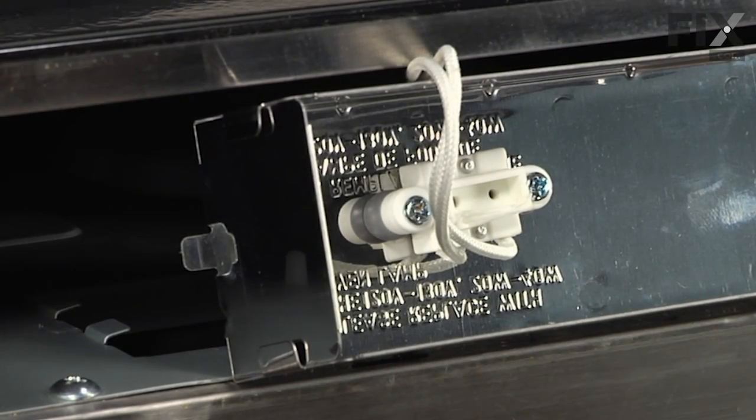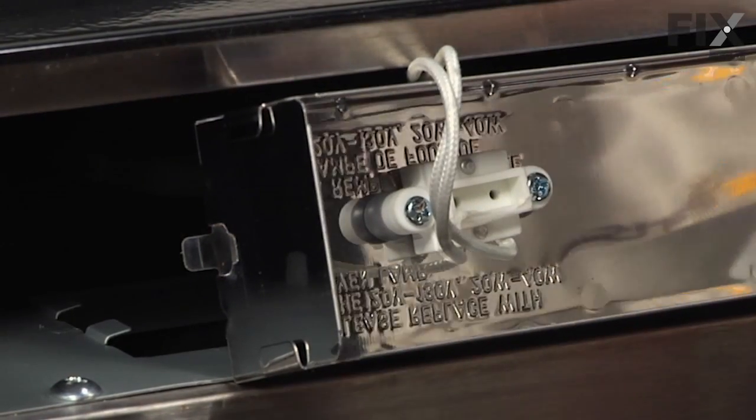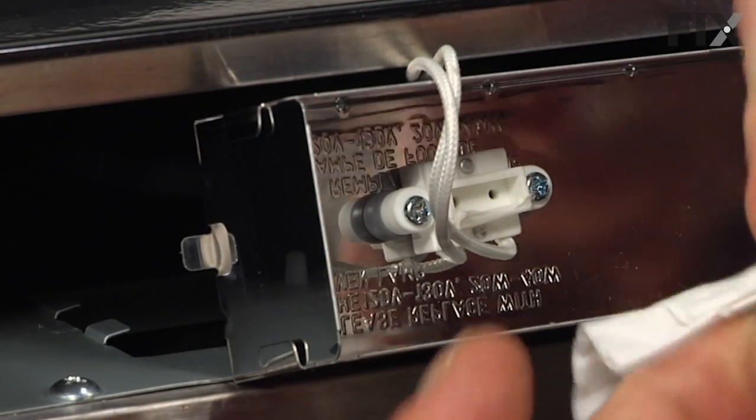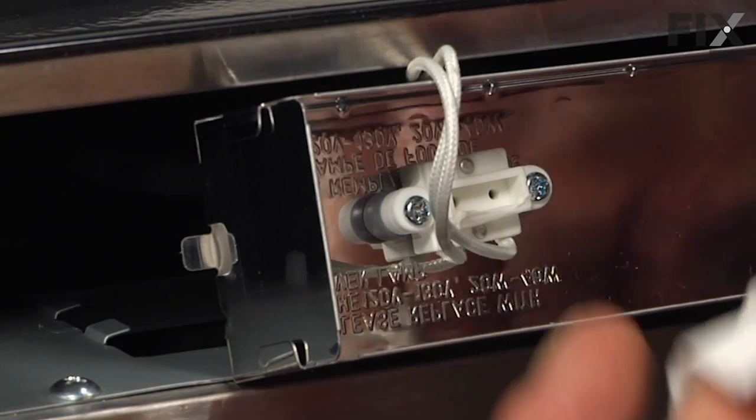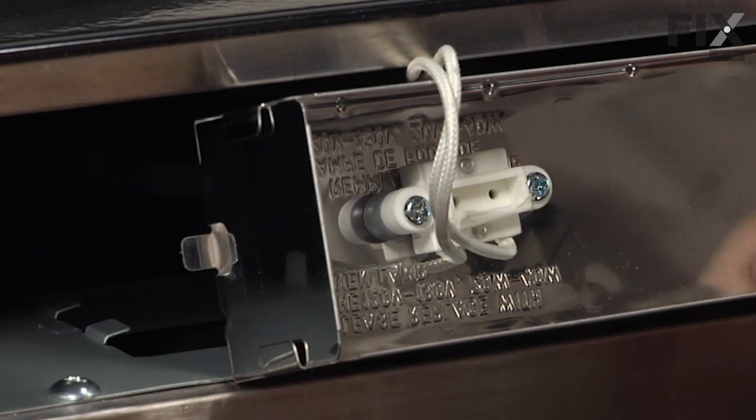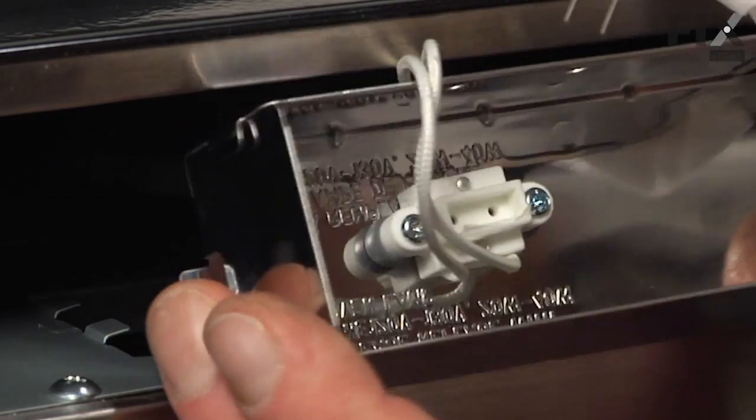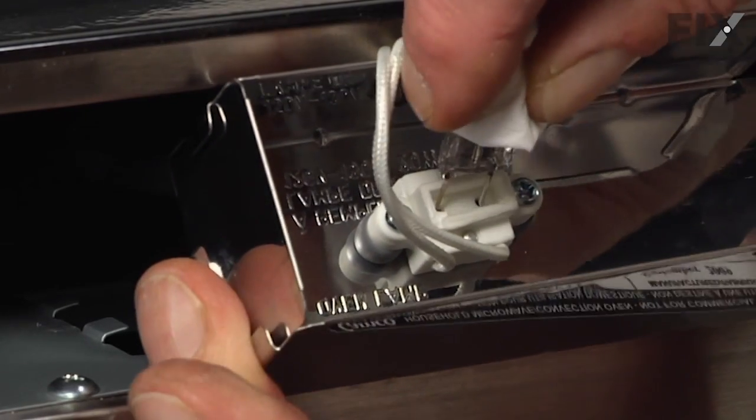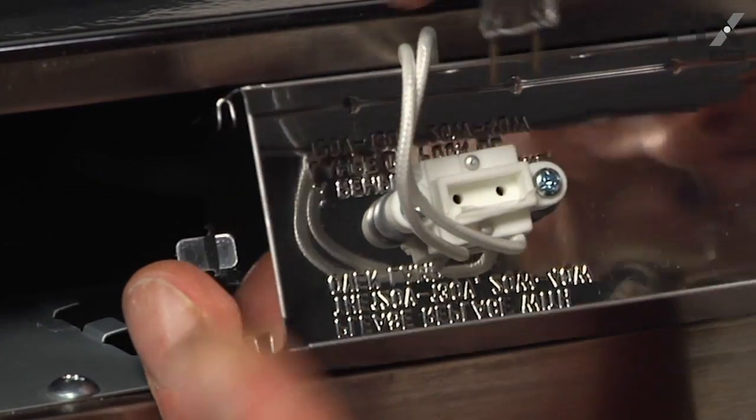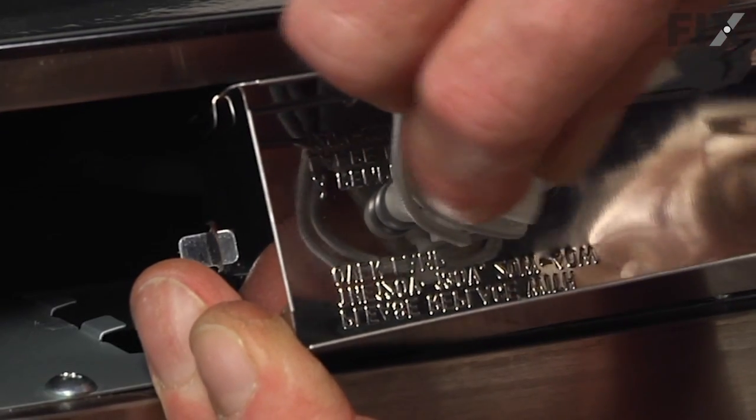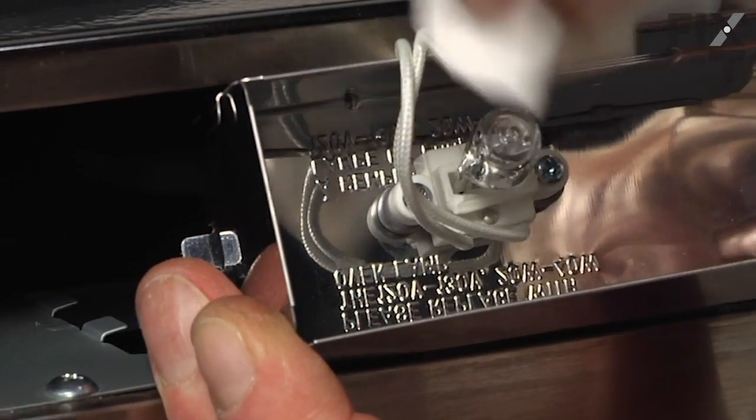Before you install the new one, we want to make sure it's nice and clean, because halogen light bulbs burn very hot and if there's any oil from your fingers on them, it will actually cause the glass to break. So clean it well, and then with a tissue or a soft rag, insert it into the socket. Make sure it's pushed in all the way and be careful not to touch the bulb again.